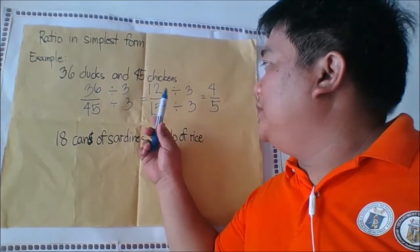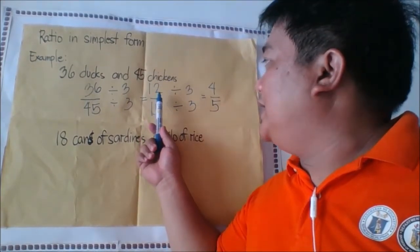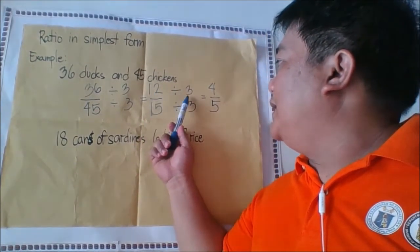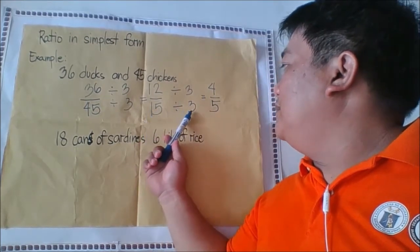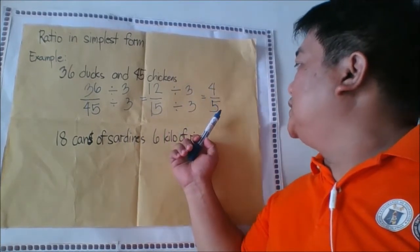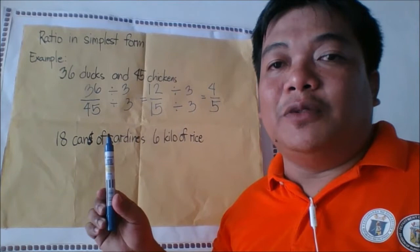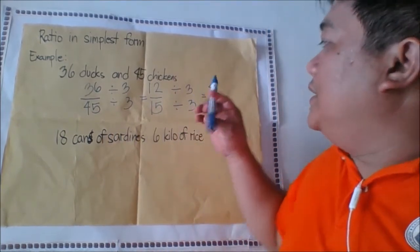We will express them into simplest form again. So 12 divided by 3 is 4, and 15 divided by 3 is 5. Now since 4 and 5 have only one common factor, which is 1, this time 4 to 5 is what we call the simplest form of the ratio.